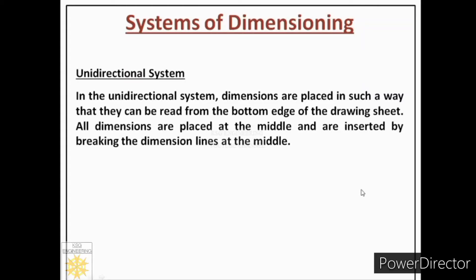Let us first see the definition of the unidirectional system, then we will understand it through an example. In the unidirectional system, dimensions are placed in such a way that they can be read from the bottom edge of the drawing sheet. All dimensions are placed at the middle and are inserted by breaking the dimension lines at the middle.